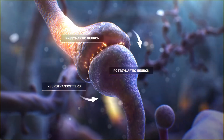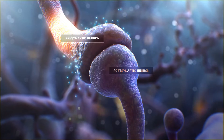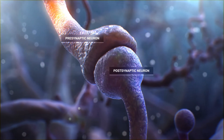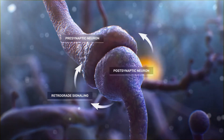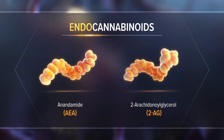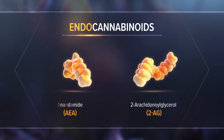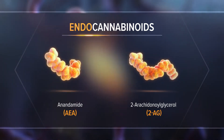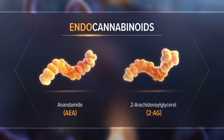In response to excess neurotransmission, chemicals are released from postsynaptic neurons that modulate presynaptic neurons, a process called retrograde signaling. One class of chemicals involved in retrograde signaling is known as the endocannabinoids, and includes anandamide or AEA and 2-arachidonylglycerol or 2-AG.